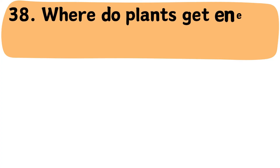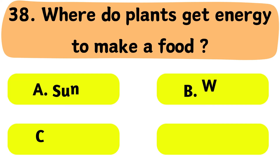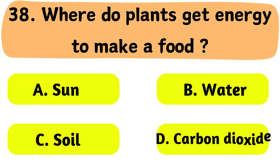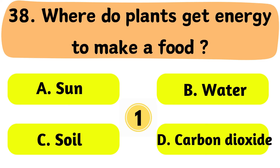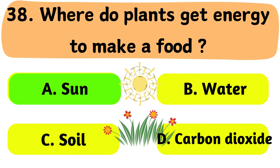Question No. 38: Where do plants get energy to make food? A. Sun. B. Water. C. Soil. D. Carbon dioxide. The correct answer is Option A: Sun.